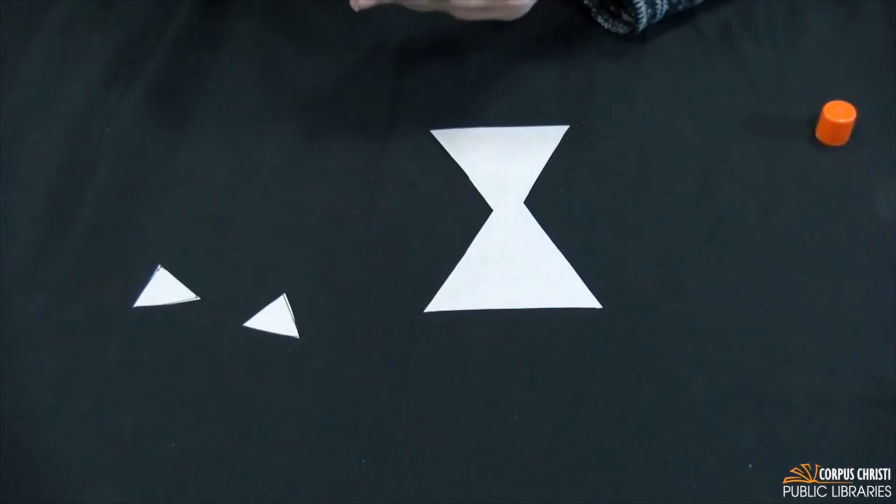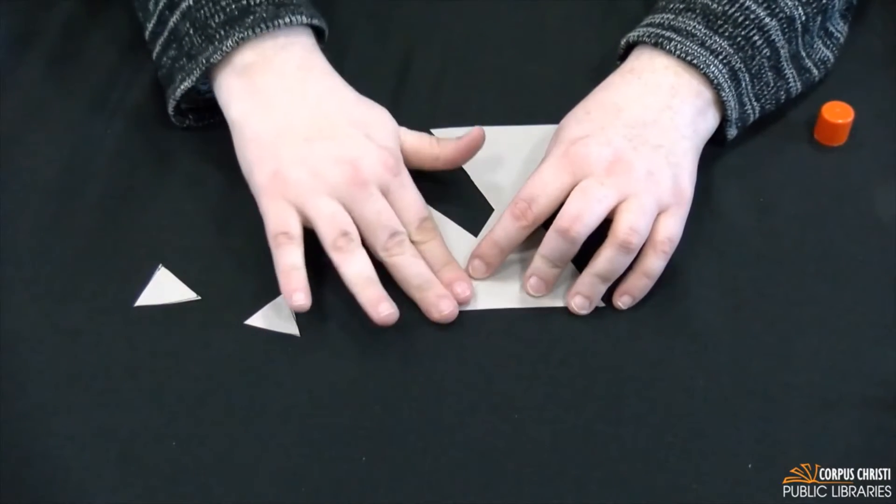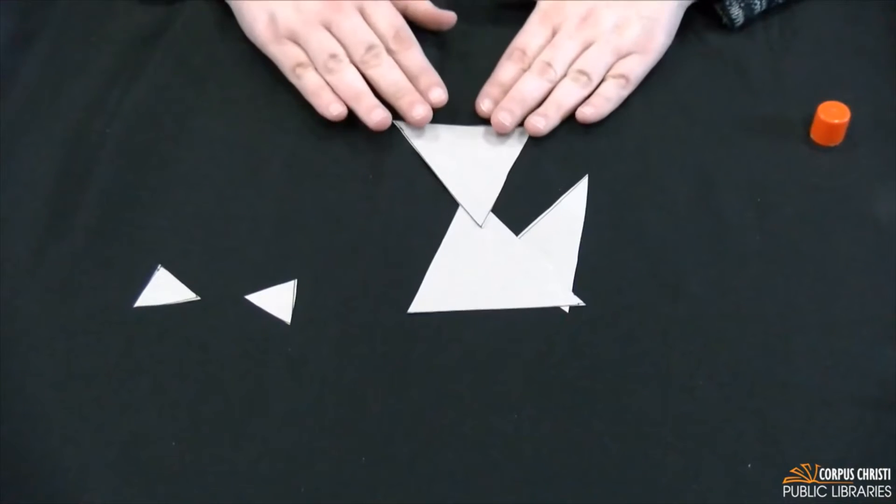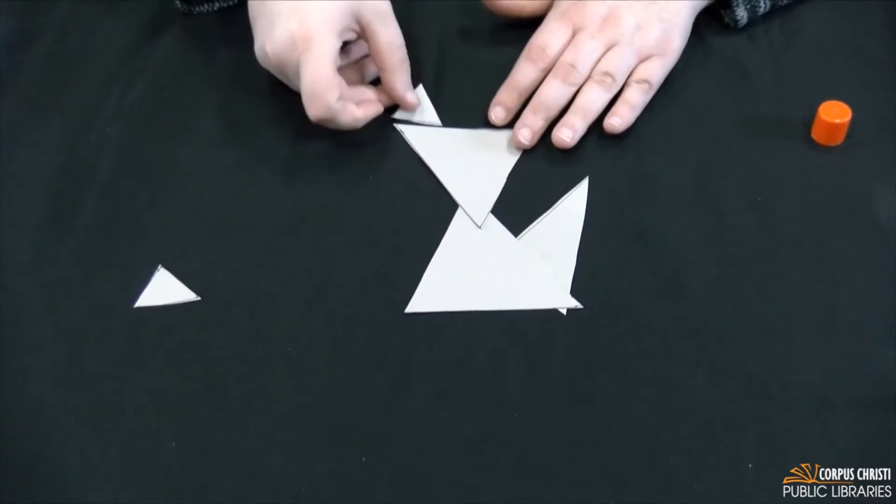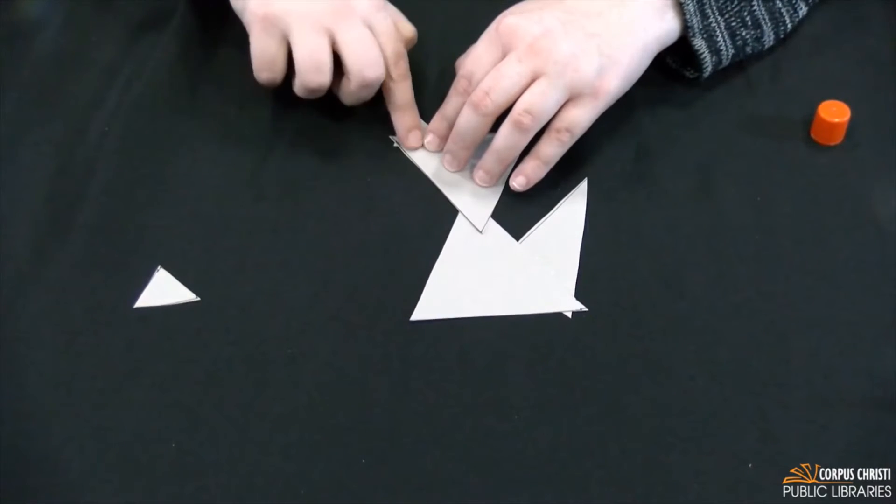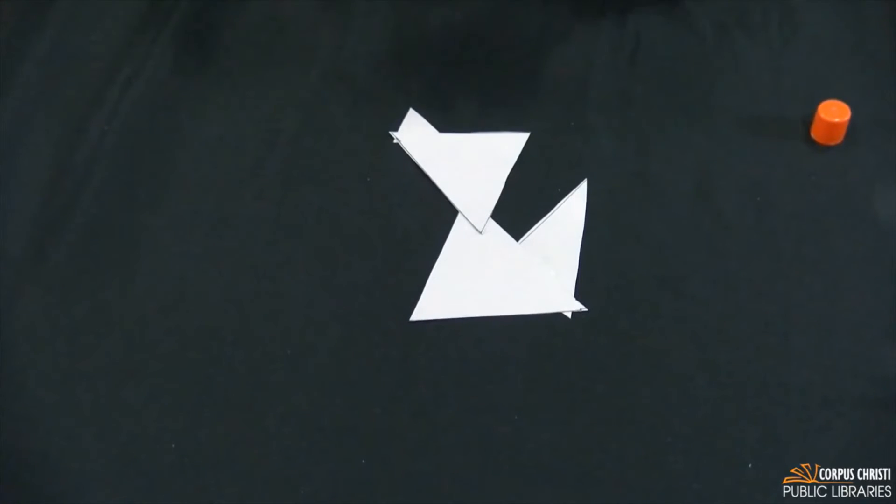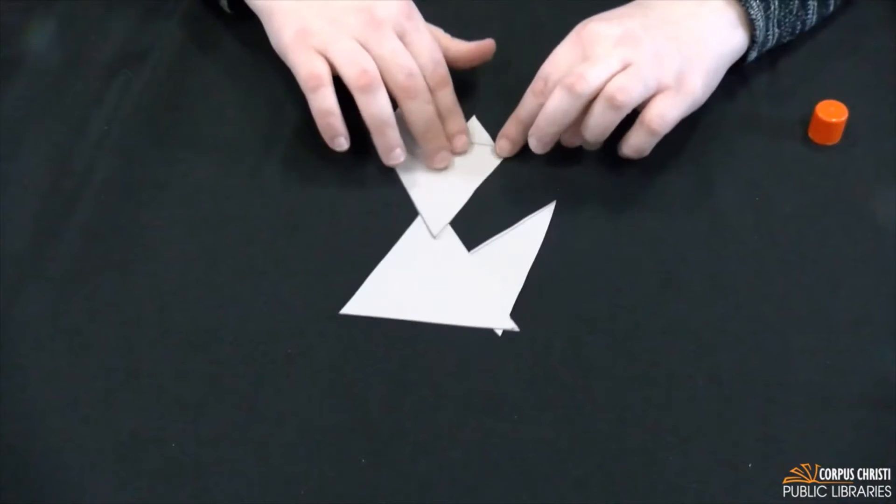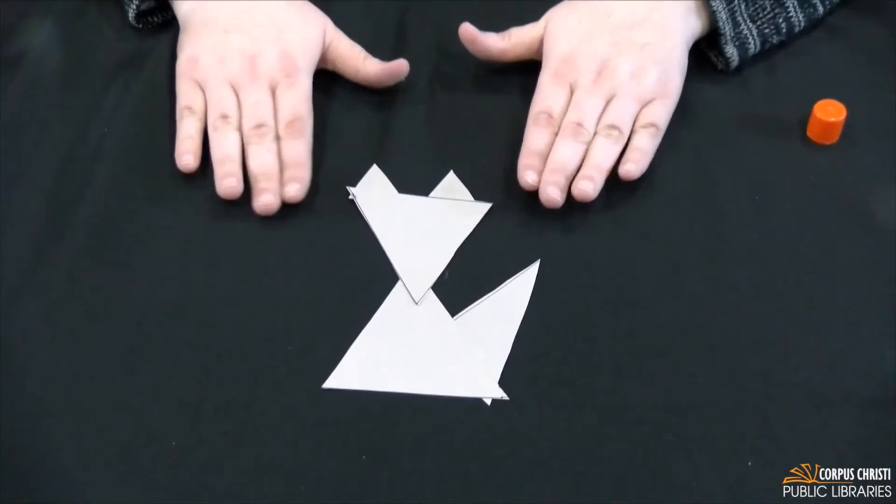Some more glue. So my raccoon is starting to take shape. I'm going to go ahead and glue on the ears. And I have the basic shape of my raccoon.